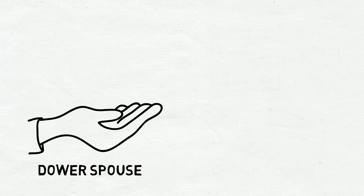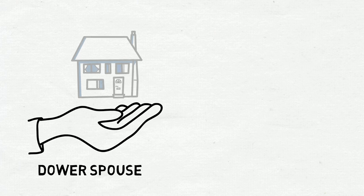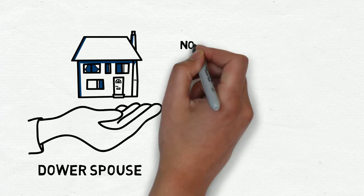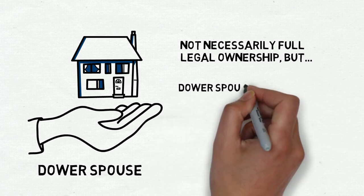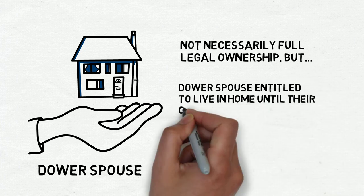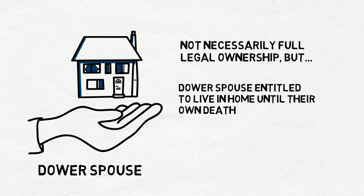The second is by entitling the dower spouse to a life estate in the home after the death of the owner spouse. While this doesn't mean the dower spouse gets full legal ownership of the property, it does mean that the dower spouse is entitled to live in the home until their own death.